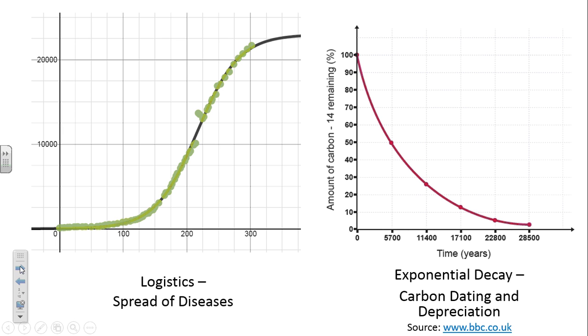First of all, we have a logistics function. A logistics function is often modeling the spread of diseases. Last year, about this time, there was a lot of news about the Ebola epidemic in Africa. There was a lot of news about it because there were a lot of cases, much more than there have been in the past.